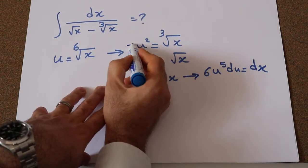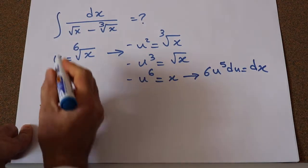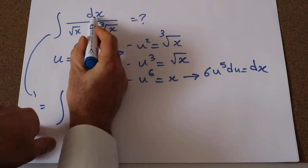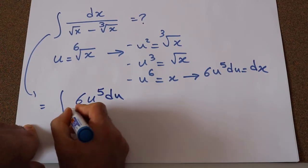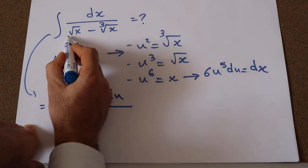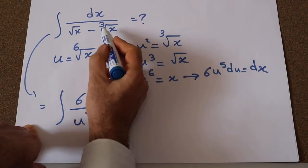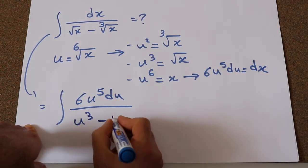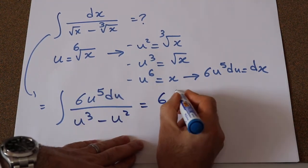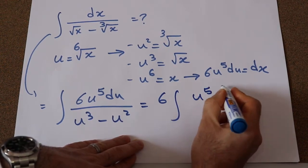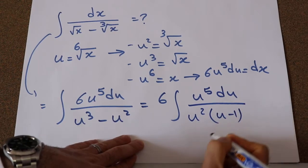All you need to do now is to substitute these three expressions into the integral. You can rewrite this integral as: instead of dx, write 6u⁵du; instead of the cube root of x, write u³; and instead of the square root of x, write u². Taking the 6 out as a constant, we get 6 times the integral of u⁵du divided by u²(u minus 1).